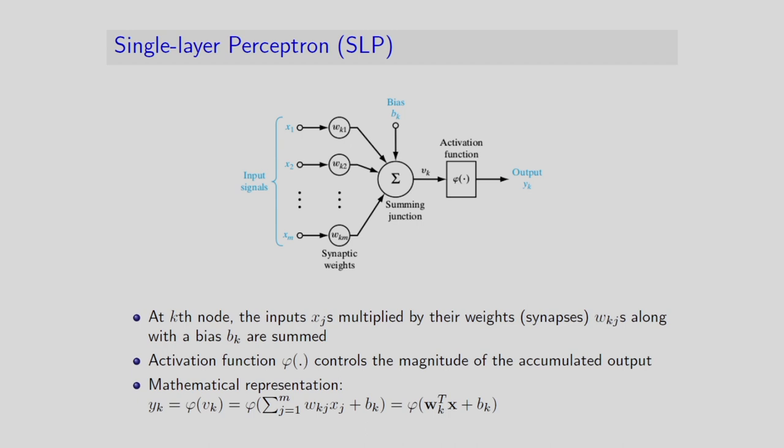Before explaining the vanishing gradient, I will explain the single layer perceptron (SLP), then the multi-layer perceptron (MLP) and backpropagation training algorithm. In the SLP, we have input signals x1, x2 up to xm, a summing junction, and connecting weights wk1, wk2, wkm. We also consider a bias input bk. The SLP has no hidden layers — only an input layer and an output node with an activation function.